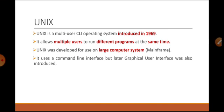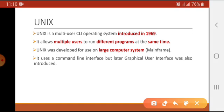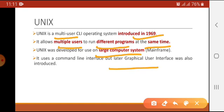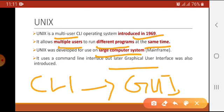The second operating system using command line interface is UNIX. Unlike DOS, which was single-user, UNIX is a multi-user command line interface introduced in 1969. It allows multiple users to run different programs at the same time, which is opposite to DOS. UNIX was developed to run on large computer systems like mainframes. It uses command line interface, but later a graphical user interface was also introduced. Initially when released it had CLI, but with the evolution of time a new version introduced GUI.